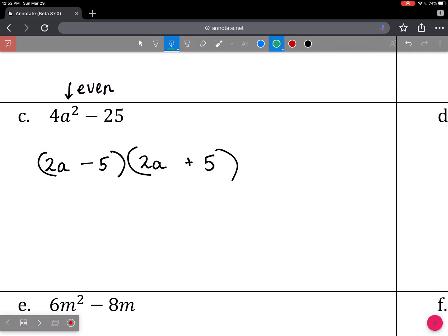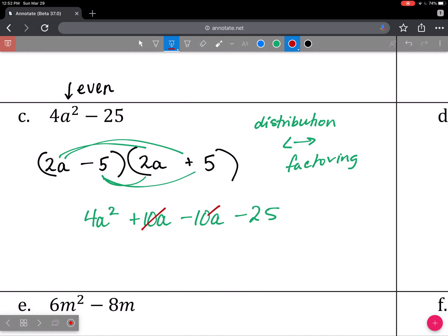Now just to make sure that we've done this correctly, let's undo this process by distributing. Remember that distribution and factoring are inverse processes of each other. 2a times 2a gives 4a squared, 2a times positive 5 gives positive 10a, negative 5 times 2a gives negative 10a, and negative 5 times positive 5 gives negative 25. You can see that these middle terms are going to cancel as they are a zero pair.